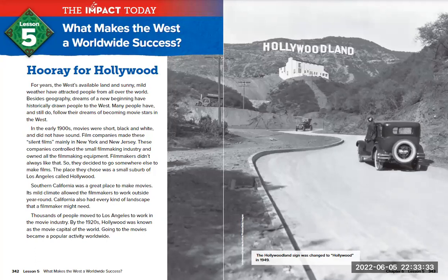We're on page 342, lesson five: What Makes the West a Worldwide Success, and we're looking for details to create a summary. The title here is 'Hooray for Hollywood.' For years, the west's available land and sunny, mild weather have attracted people from all over the world. Besides geography, dreams of a new beginning have historically drawn people to the west. Many people have, and still do, follow their dreams of becoming movie stars in the west.